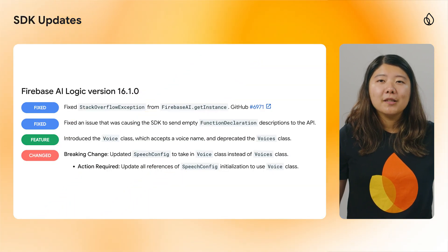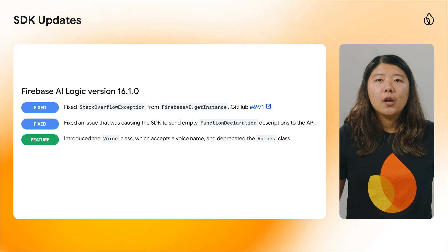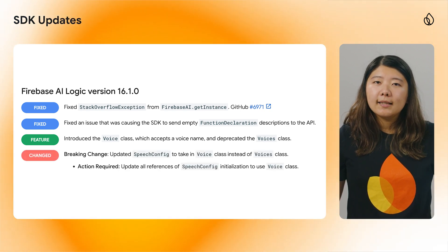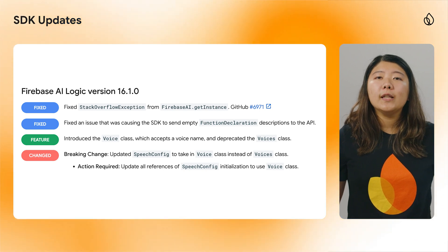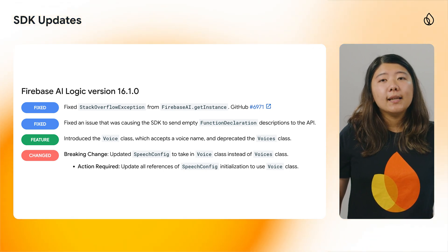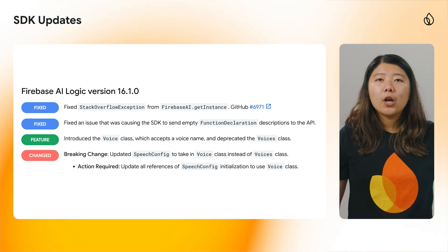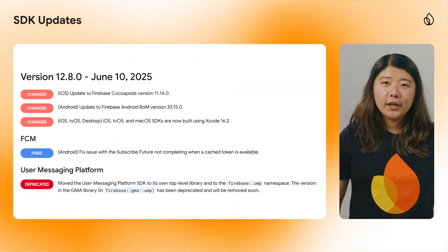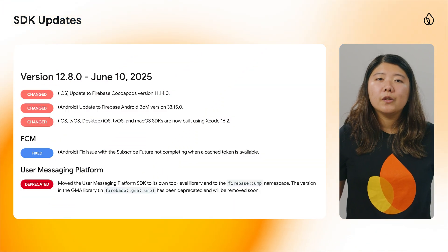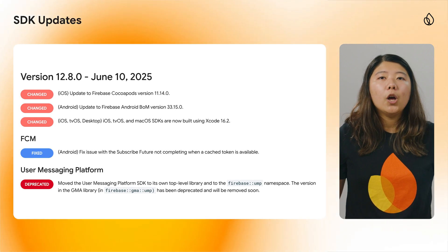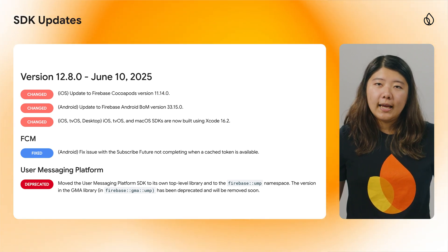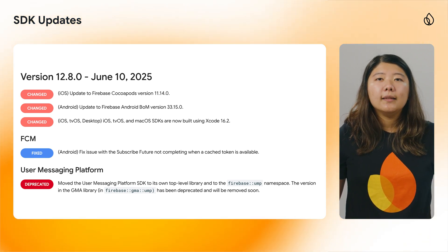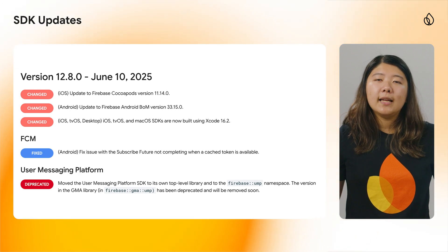For Android developers, look out for a breaking change with the SpeechConfig class, which now accepts a VoiceClass instance instead of a deprecated VoiceSys class, so please update your SpeechConfig initializations accordingly. Speaking of breaking changes, C++ version 12.8.0 moves the user messaging platform SDK to its own top-level library. The previous version in the GMA library is now deprecated.